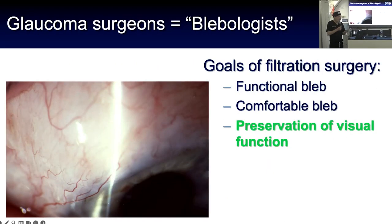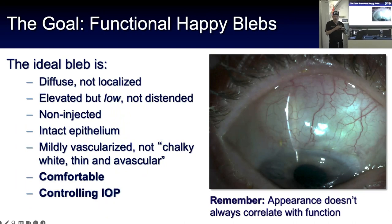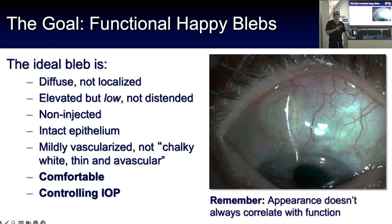The goals of filtration surgery are getting a functional bleb, a comfortable bleb, and preservation of visual function. The ideal bleb is diffuse — not isolated like a bubble on the surface of the eye. It should be low and not distended, never injected after the first week or so, and should have an intact epithelium. It should definitely not be a chalky white bleb with little epithelium on top, as those are a setup for infection and other complications.